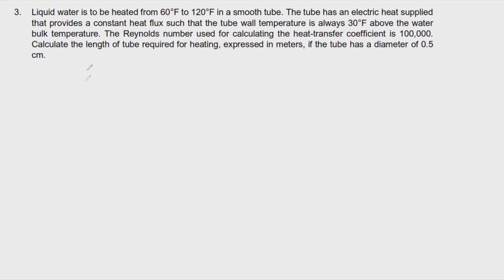When solving for forced convection, natural convection, or any kind of convection, there are three main rules. The first is determining our condition. In this case, what we have is liquid water in a smooth tube.